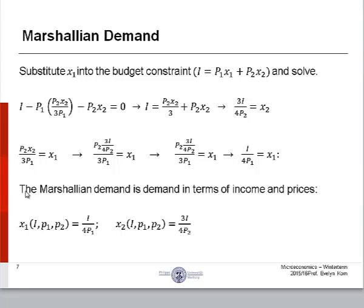Then we can go back to our original identity where x1 equals p2x2 over 3p1. We can substitute out x2 for this term right here, 3i over 4p2. And then we'll have this equation right here. And we will solve for x1. Basically, p2 cancels out right here. 3 here and 3 here cancels out. And we're just left with i over 4p1 equaling x1. This gives us a Marshallian demand for the respective goods in terms of income and prices p1 and p2.